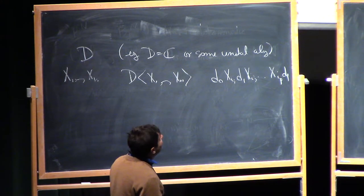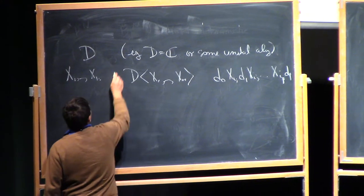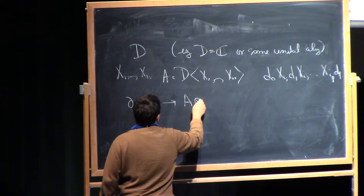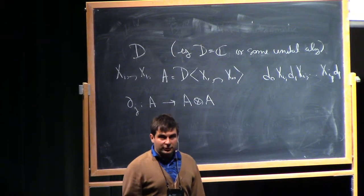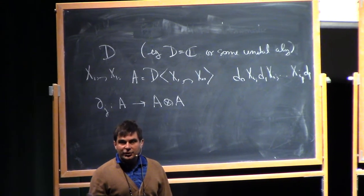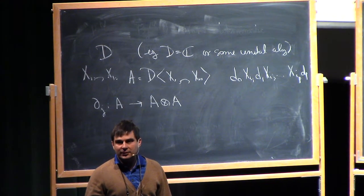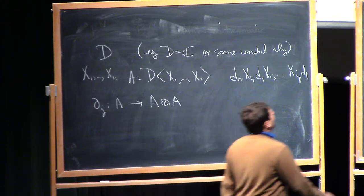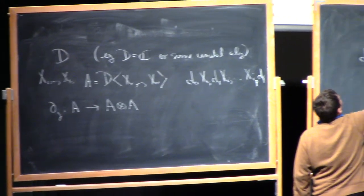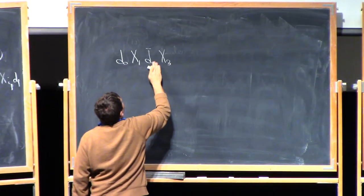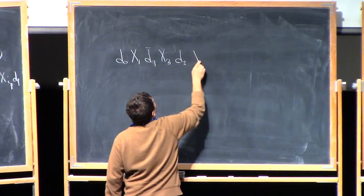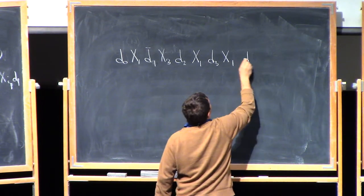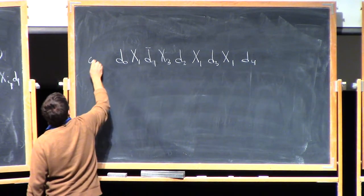And then the way you differentiate such a thing, so if I call this algebra A, I have these difference quotient derivations. They go from A to A tensor A. And the rule is that you differentiate the way you learn to differentiate in calculus, but every time you differentiate an x, you put a tensor sign instead of it. So you remember where that x was, and you mark that location with a tensor sign. So let me give you an example. Suppose I have something like d_0, x_1, d_0, x_3, d_1, x_3, d_2, x_1, d_3, x_4. Let's do one more x_1 here. d_4. And let's compute the derivative of this thing with respect to x_1.